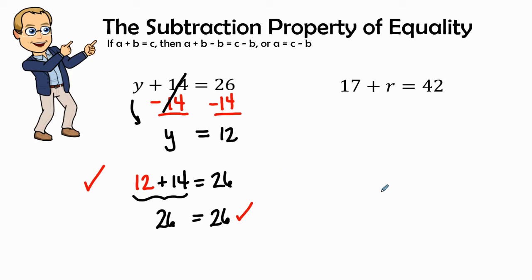In our next problem, we see 17 plus r equals 42. We don't see a sign in front of this 17, so every time I don't see a sign, I have to assume that it's going to be positive. If it was negative, that negative sign would be there. So, what is the inverse of positive 17? It's a negative 17.